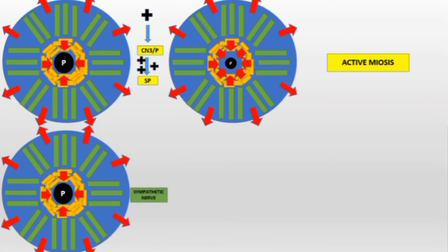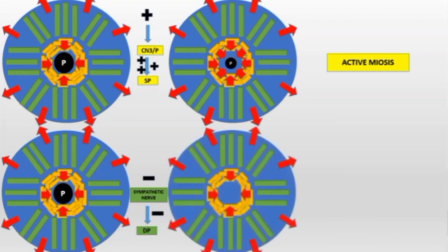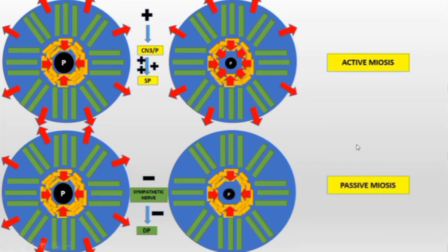The sympathetic nerve supplies the dilator pupillae. When there is inhibition of the sympathetic nerve, the supply to the dilator pupillae is cut. The force that was pulling the pupil outward is now lost, so only the sphincter pupillae force remains, making the pupil small. This is called passive miosis, because the pupil is getting small not due to active sphincter pupillae action, but due to loss of dilator pupillae.